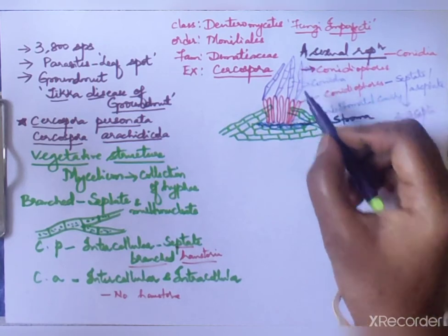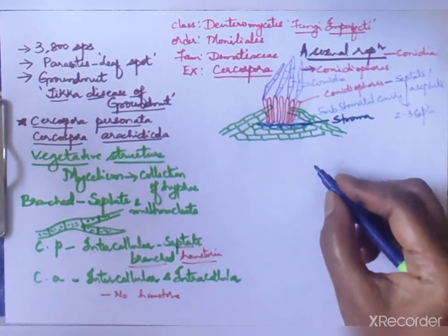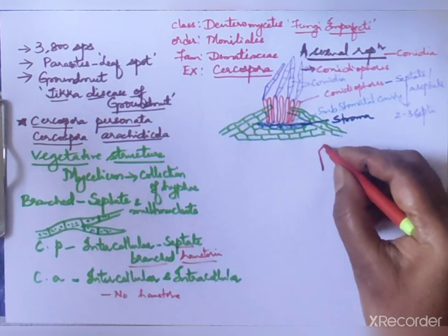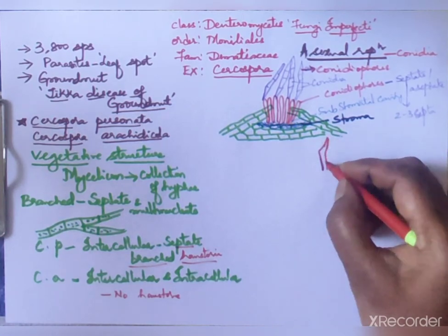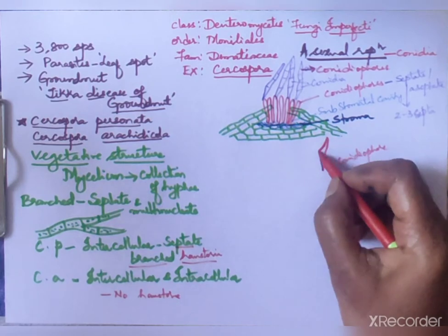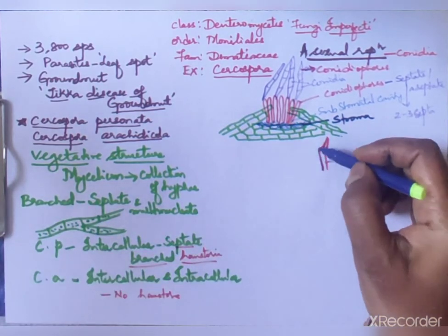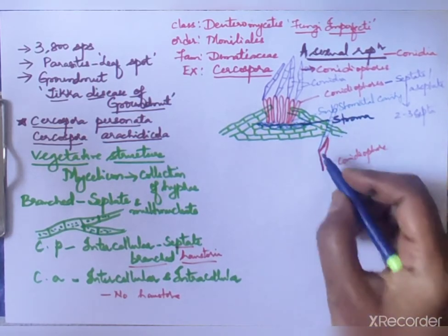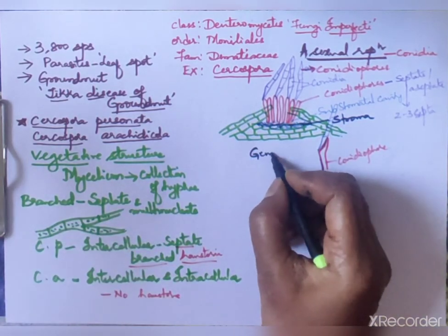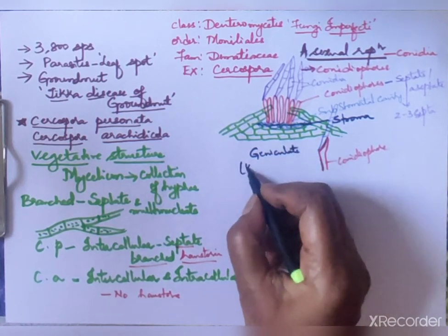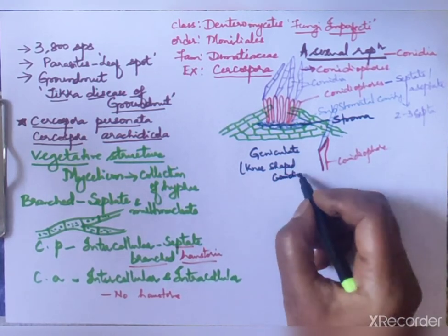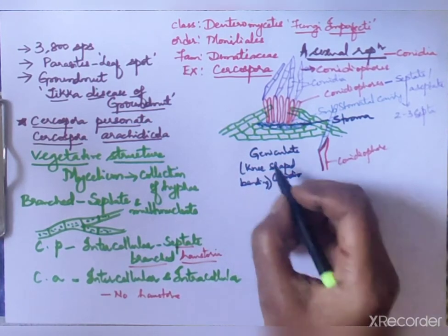When the conidia fall off or get detached from the conidiophore, they leave a scar on the conidiophore. The conidiophore is therefore called geniculate, meaning it shows a knee-shaped bending due to these scars.